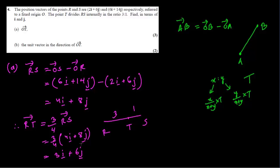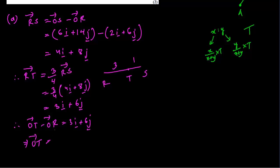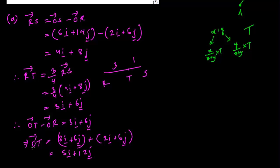Now we have to find OT using the position vector rule. RT = OT − OR, so OT = RT + OR = (3i + 6j) + (2i + 6j). Adding: 3 + 2 = 5i, and 6 + 6 = 12j. So OT = 5i + 12j.